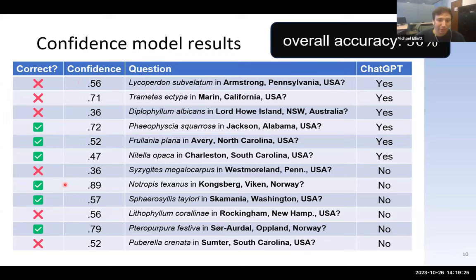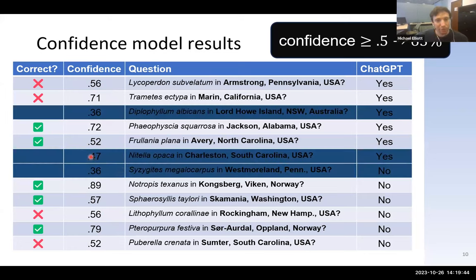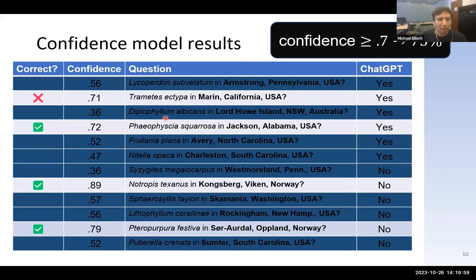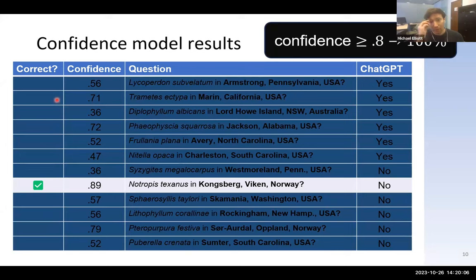But we have confidence values for each response. A confidence of 0.36 is really low — confidence spans between zero and one. If we decide not to trust anything below 50% confidence, we're left with four incorrect and five correct responses, bringing accuracy up to 63%. Raising the threshold to 0.7 gives three correct and one incorrect — 75% accuracy. At 0.8, we get one correct answer — 100% accuracy.